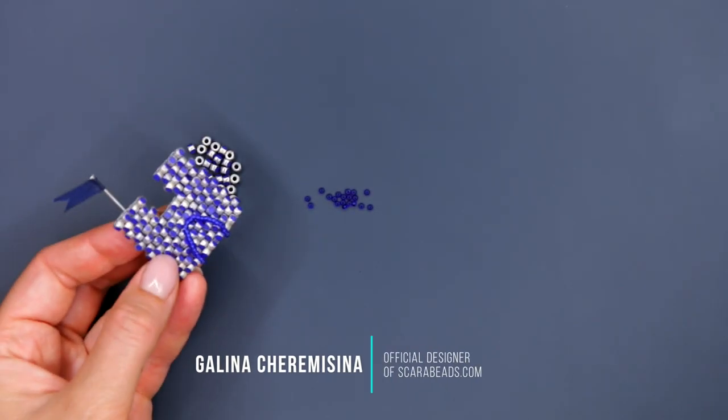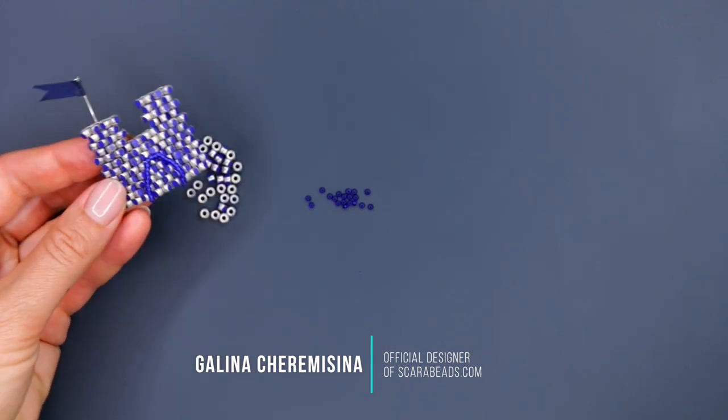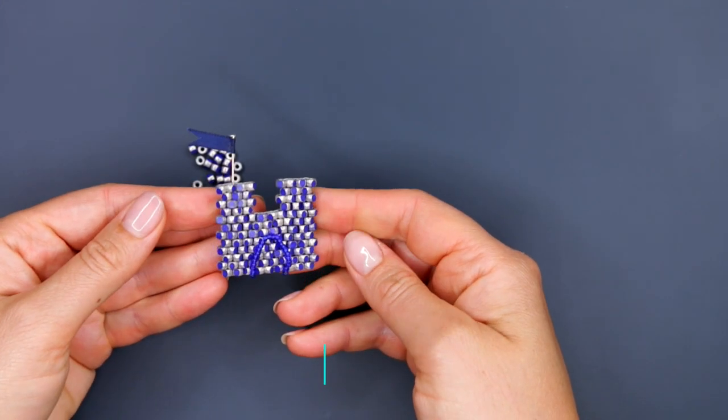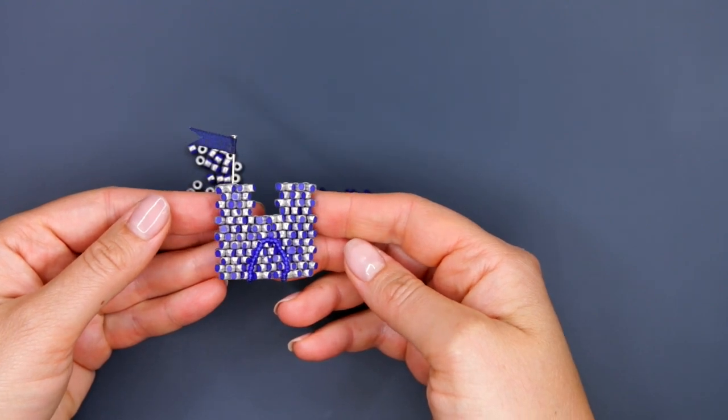Hello, my dear craftswoman! My name is Galina Churomissina, and today we are going to make such an original brooch in the castle shape with a gate and a funny flag with peyote stitch.